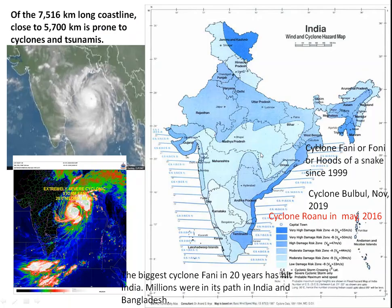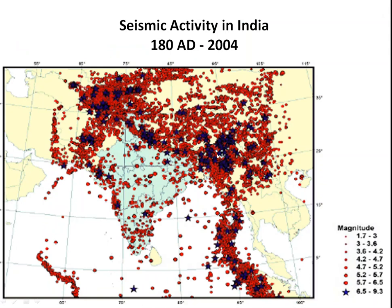This map shows cyclone-prone areas, basically in the coastal regions of India. India has a coastline of 7,516 km, of which 5,700 km is prone to cyclones. Most cyclones occur in the Bay of Bengal or the Indian Ocean. Cyclone Rono in May 2016, Cyclone Bulbul, and Cyclone Fani — one of the biggest cyclones to strike the eastern coast, especially Odisha — are notable examples. Cyclone names in Bengal have been given since 1999.